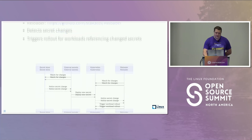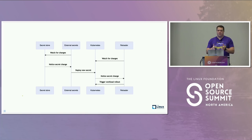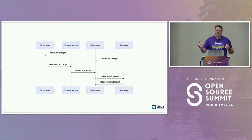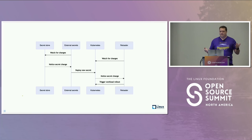So it's pretty cool. Going back to our earlier process: now we have Kubernetes in the middle as our environment, we have External Secrets that deploys the secrets to the Kubernetes cluster, and we have Reloader that watches for those changes and triggers workload rollout. Basically, with this pipeline, whenever something changes in the secret store, you never have to touch anything. It automatically deploys the secret to the Kubernetes cluster and automatically reloads the workloads.